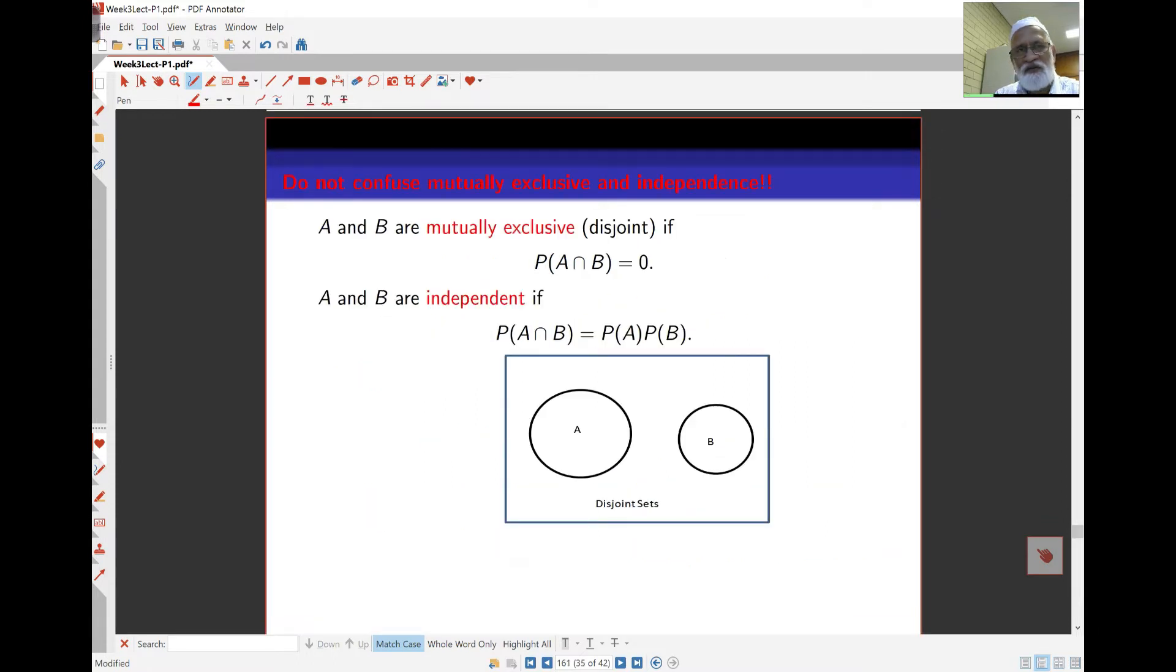Now, don't confuse these two things. Mutually exclusive and independence are different concepts. Two events are mutually exclusive or disjoint if the intersection is zero. This diagram over here shows you two events A and B that are disjoint or mutually exclusive. Independence actually means probability of A intersect B is probability of A times probability of B. So, there's a difference.